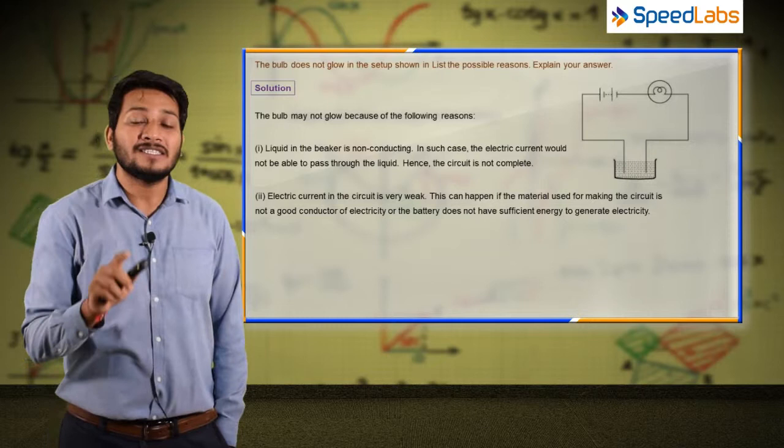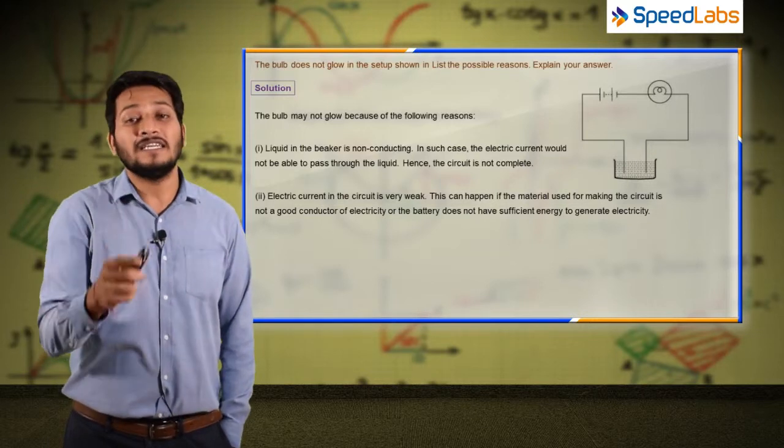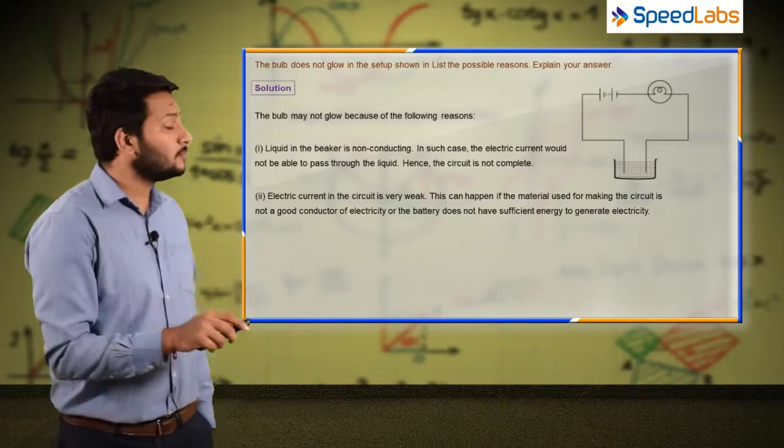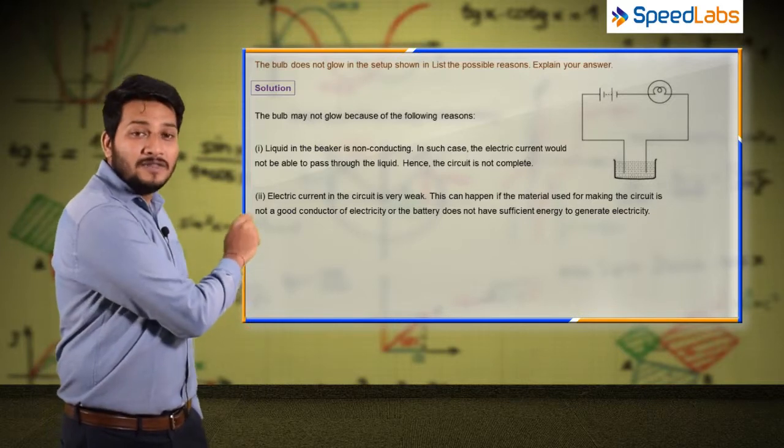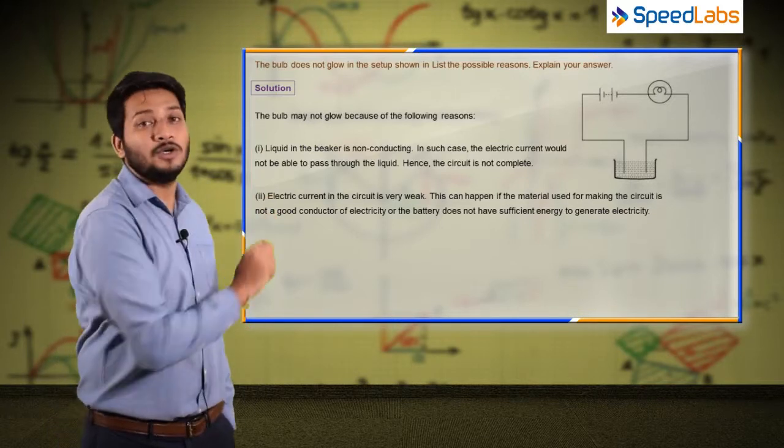So the electric current in the circuit is very weak, and what could be the reason? The material used for making the circuit is not a good conductor of electricity.